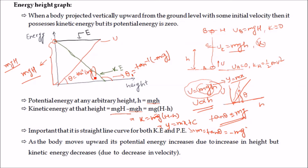This is the energy-height graph: the red curve is for potential energy, and the green curve is for kinetic energy. If you add these two graphs, you get a straight horizontal line representing total mechanical energy, which equals mgH. For any point during the motion of the object from A to B, the total energy remains constant and equals mgH.